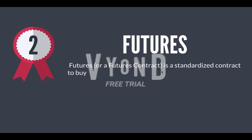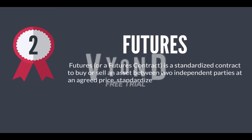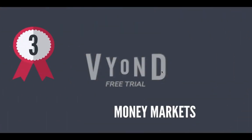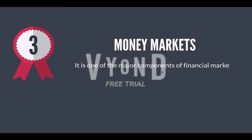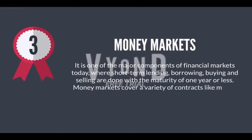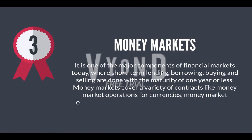Second, futures — a futures contract is a standardized contract to buy or sell an asset between two independent parties at an agreed price, standardized quantity, and a specific date. It covers various contracts like currency futures contracts. Third, money markets — one of the major components of financial markets where short-term lending, borrowing, buying, and selling are done with maturity of one year or less, covering money market operations for currencies, interest, and covered calls on equities.